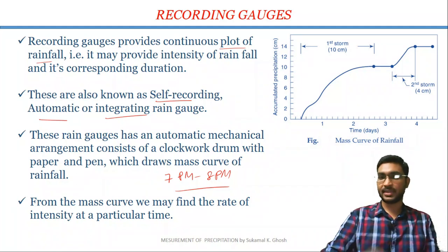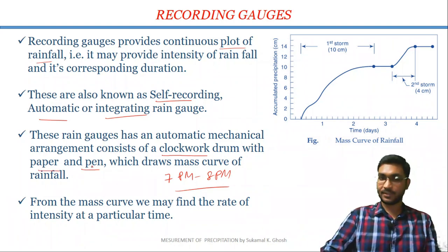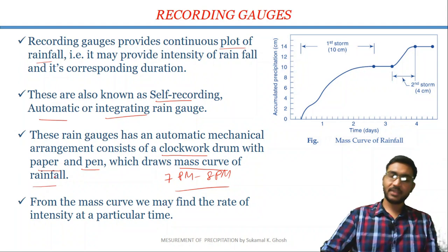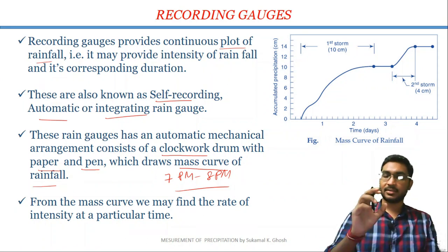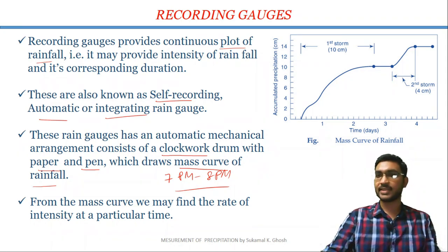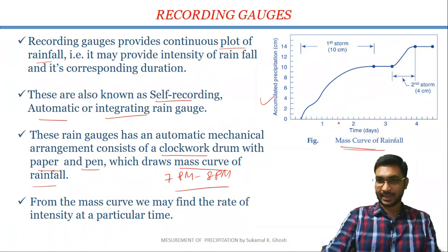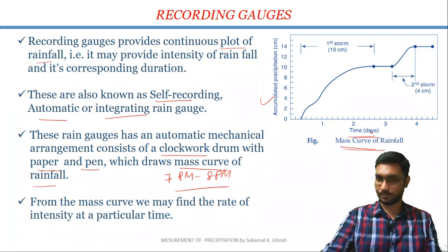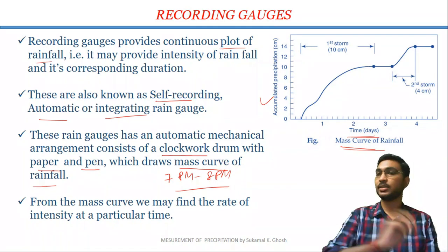This type of rain gauge has an automatic mechanical arrangement which consists of a clockwork drum, a paper, and a pen, which draws a mass curve of rainfall. The mass curve of rainfall is the plot between accumulated precipitation or cumulative rainfall versus the time or duration. You can see this is the mass curve of rainfall — in the x-axis you have time or duration, and in the y-axis you have cumulative rainfall. From this mass curve, we can calculate or measure the intensity of rainfall at a particular time.